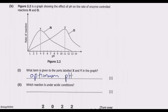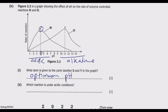This is the point of the highest rate of reaction. Which reaction is under acidic conditions? We know that a pH value below 7 is acidic, and above 7 is an alkaline solution. Reaction N has its highest rate of reaction at pH 4, which is below 7, so N must be acidic. That is how you approach this question.